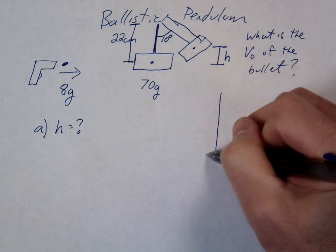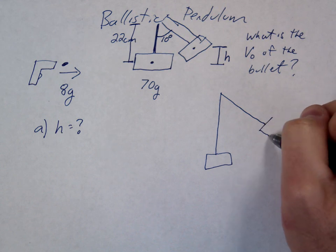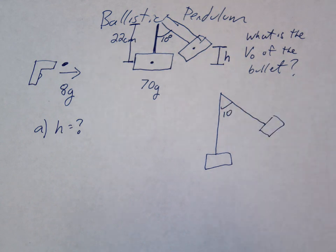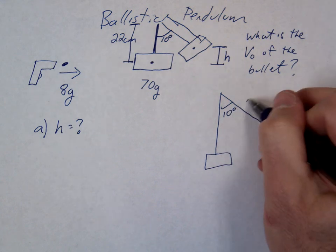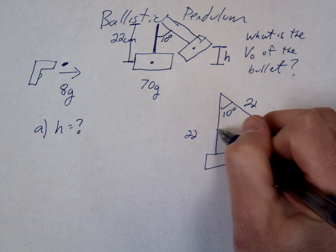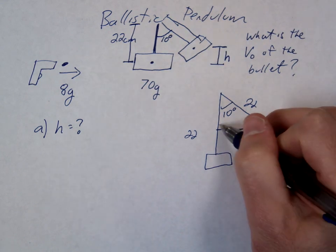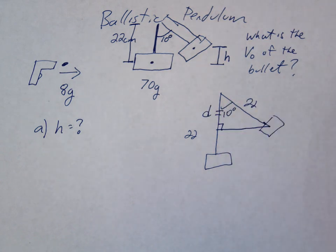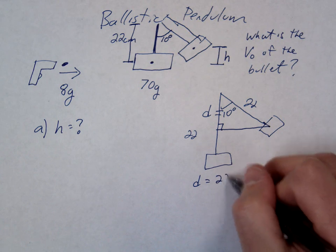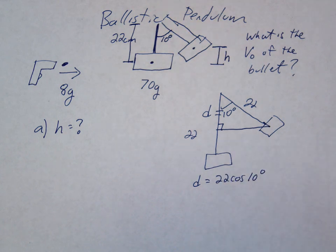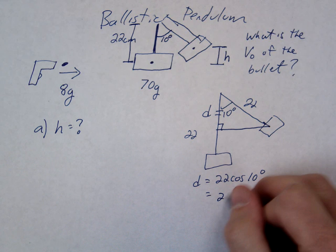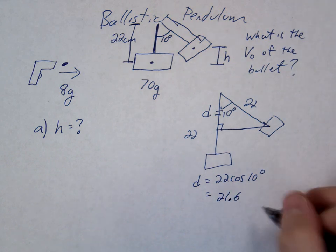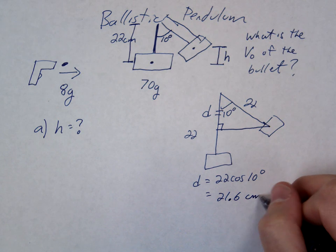Okay, so actually let's just blow this up here. So this is 22 and this is 22. This is 10 degrees. If we draw a triangle across, or if we create a triangle by drawing across here, we can find this distance. We'll call that d. How are we going to find d? So d is going to be equal to 22 cosine of 10 degrees.